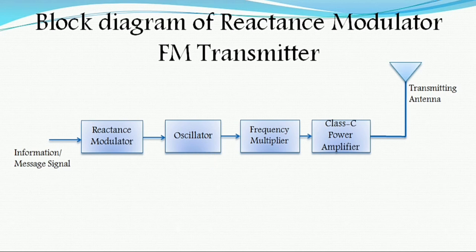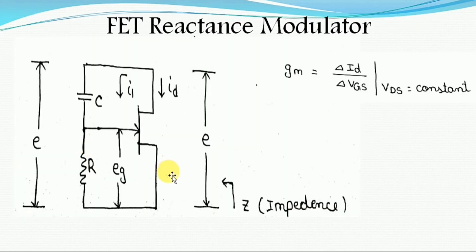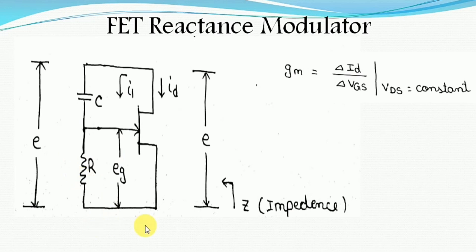This is the FET reactance modulator circuit. With proper biasing of the FET, the three terminals — gate, source, and drain — will themselves act as reactances, and this will be connected to the tank circuit of an oscillator. Mathematically, we need to prove that the change in voltage converts to reactance, and from the reactance change it converts to frequency variation.